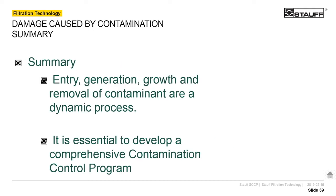The summary: the reason we need a plan is because the generation, growth, and removal of contaminants is a dynamic thing — it can change. It's not something where your system is dirty, you buy a filter, put it in, and walk away expecting 100% success. Over the life of a piece of equipment, filtration needs may change somewhat. Monitoring, trending, and having a plan is really important in order to stay ahead of it.